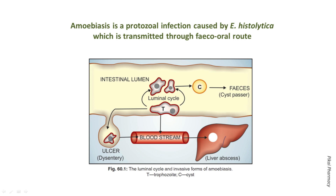The trophozoite form can invade mucosal tissue, form ulcers, and cause acute dysentery. Sometimes the trophozoites pass into the bloodstream and reach the liver via the portal vein, causing amoebic liver abscess. It can also affect other organs like lungs, kidney, and brain, but very rarely. Key takeaways: amoebiasis is caused by Entamoeba histolytica; the cyst form is responsible for transmission, while the trophozoite form invades tissues and organs, especially the liver, causing extra-intestinal amoebiasis.